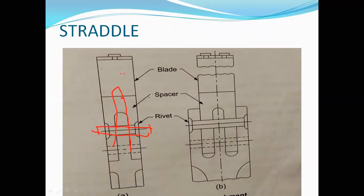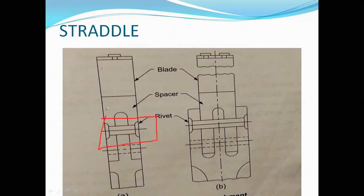So the blade and spacer are made from one piece of metal. In figure A, rivets are used to fasten this integrated blade-and-spacer assembly to the wheel.